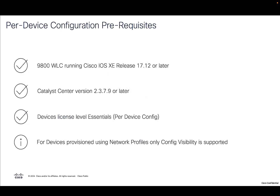There are some prerequisites to enable per device configuration on Catalyst Center. First, your 9800 wireless controller should be running release 17.12 or later. Catalyst Center software version should be 2379 or later. For device level license, we support essential DNA essential license onwards. And for devices which are already provisioned on Catalyst Center using network profiles, today only config visibility is supported.